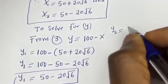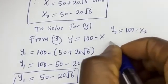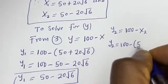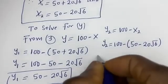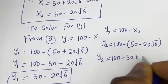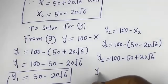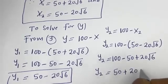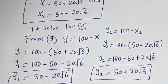Also, y2 is equal to 100 minus x2. x2 is 50 minus 20 root 6, so y2 is equal to 100 minus (50 minus 20 root 6). This gives y2 is equal to 100 minus 50 plus 20 root 6, so y2 is equal to 50 plus 20 root 6.